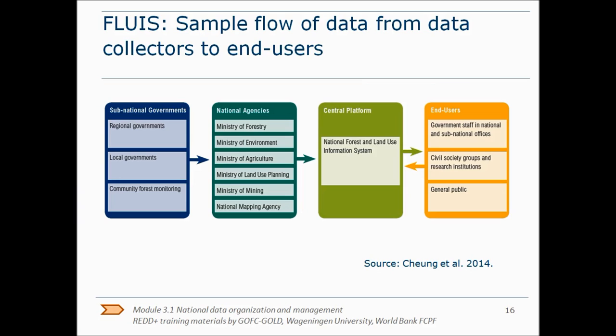This figure shows how data can flow from data collectors to end users. Data are collected by regional governments, local governments, and through community forest monitoring. Then the data are transferred to national agencies for integration. The national agencies send data to the FLUIS for further integration and aggregation. From this central platform, the data can be accessed by end users, which could be government staff, civil society groups, research institutes, and the general public. They in turn may also contribute data to the FLUIS.